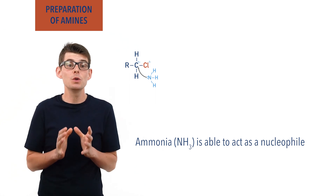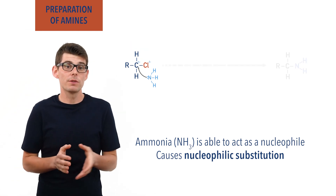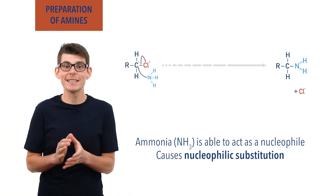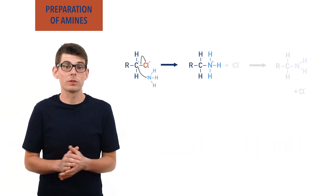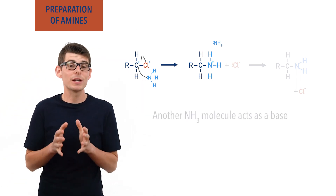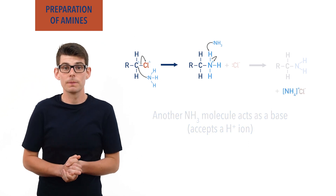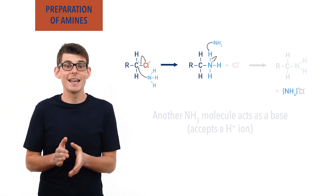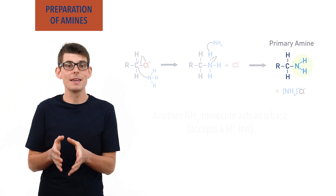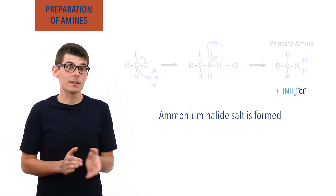As a result, a nucleophilic substitution reaction takes place, and the ammonia ends up being substituted for the halogen, which is removed as a halide ion. During the reaction an intermediate is formed with the nitrogen atom ending up with a positive charge, as it has one too many bonds. Another ammonia molecule acts as a base and removes an H+ ion from the nitrogen, becoming a positively charged ammonium ion. This leaves the nitrogen group as NH2, with three bonds, producing a primary amine product. An ammonium salt is also formed between the ammonium ion and the halide ion.